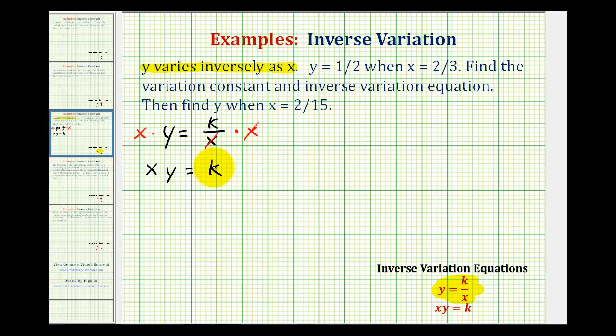So an easier way to find the variation constant is to just find the product of x and y when we have inverse variation. And notice how this equation is given here below as well.